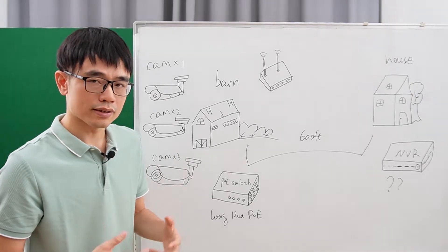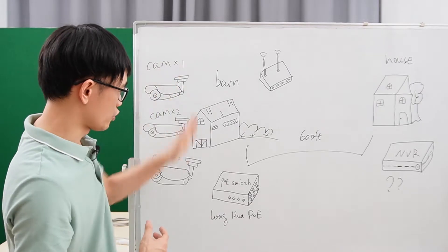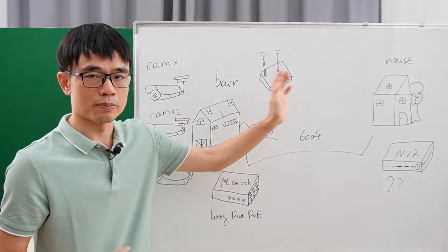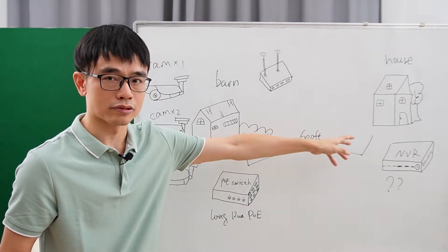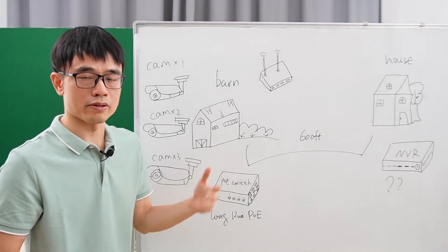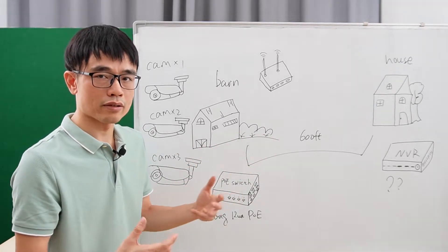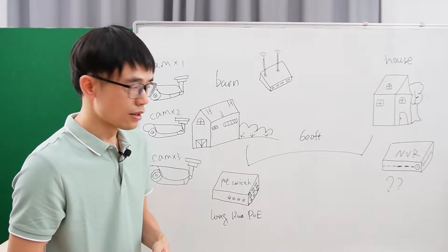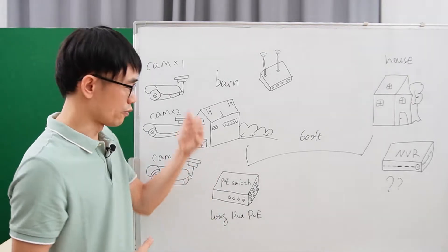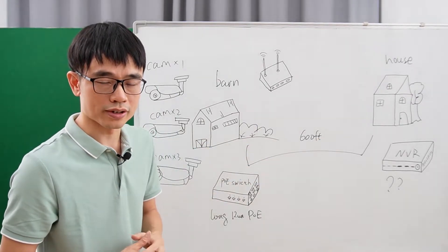The reason is because the owner wants to watch the cameras deployed in the barn and place the network video recorder at the house. That's about 600 feet, but we use the long-run PoE switch to achieve maximum 1,500 feet. You can reference my other video on how to move the camera far away from the network video recorder.